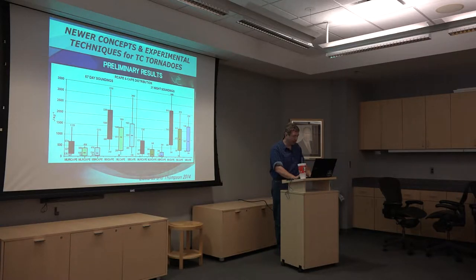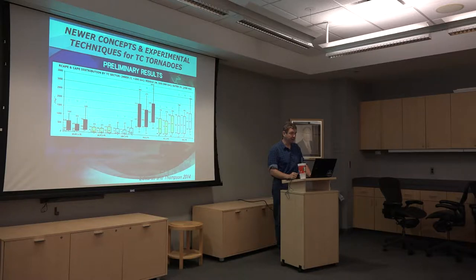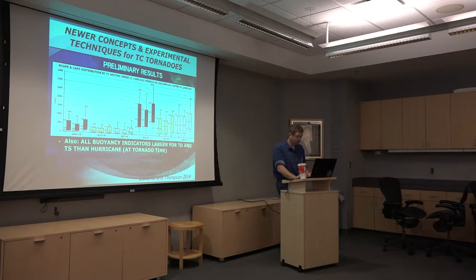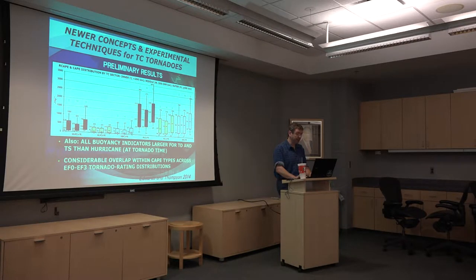Preliminary results are given in the paper. You can see the values of reversible CAPE on the left are a lot lower in absolute sense. If we introduce latent heat of fusion, we'll probably crank those values back up to something more resembling pseudo-adiabatic CAPE, but we haven't been able to do that yet. You would expect the most-unstable reversible CAPE to be bigger than the mixed-layer or surface-based parcels, and they are. The distribution differences between day and night are not as big as you might think. All buoyancy indicators are larger for tropical depressions and tropical storms than for hurricanes at tornado time, mostly because in hurricanes a large extensive CDO — central dense overcast — is limiting heating.